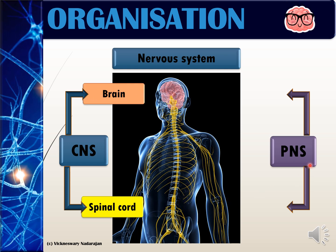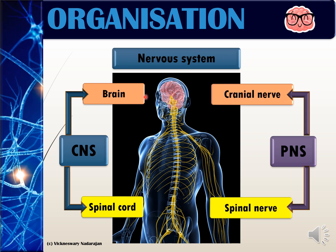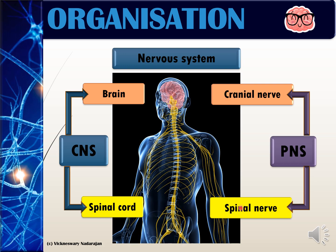The peripheral nervous system consists of branches of nerves that come out of the brain and the spinal cord. The branches that come out of the brain are called cranial nerves, while the nerves that branch out from the spinal cord are called spinal nerves.